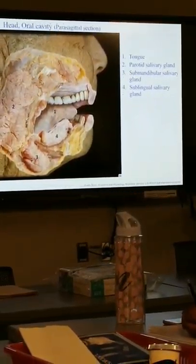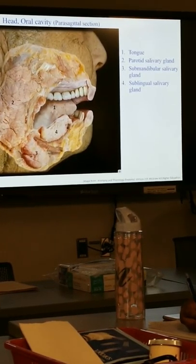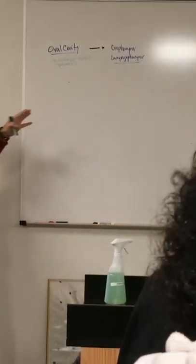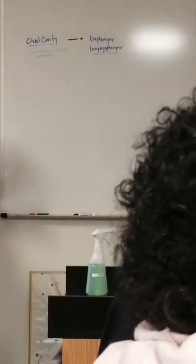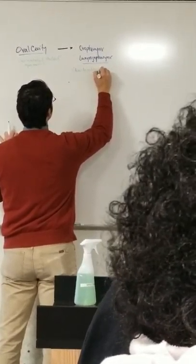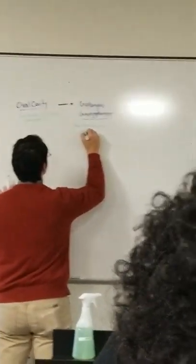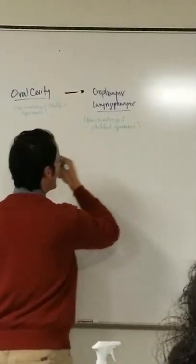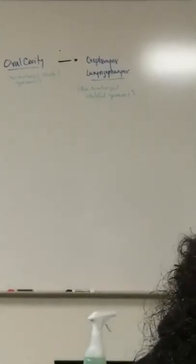From the oral cavity, food is going to get moved voluntarily as part of swallowing, back into the pharynx, and then begin its movement down towards the stomach. It's a non-keratinized, stratified, squamous epithelium, and there'll be some histology slides we look at in the future related to the digestive tract. So oropharynx and laryngopharynx.